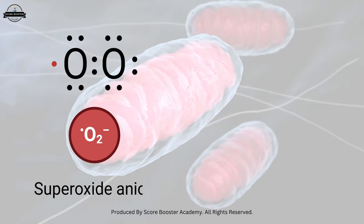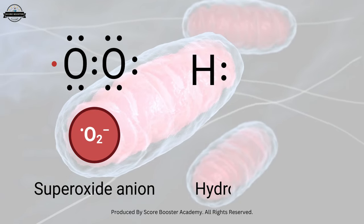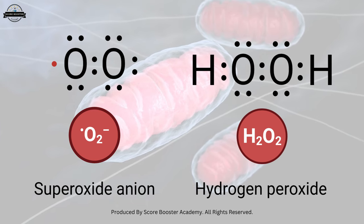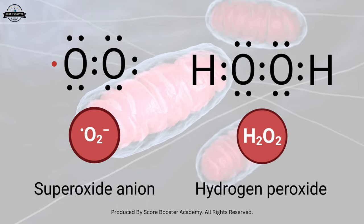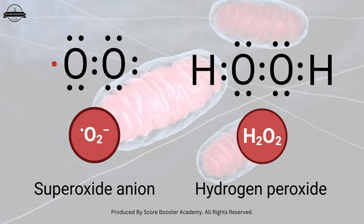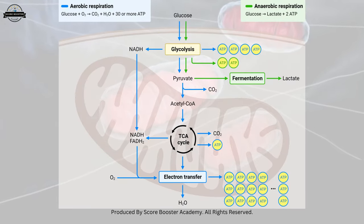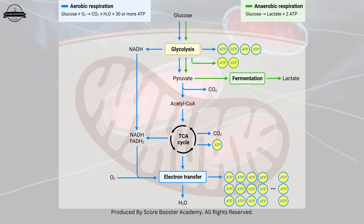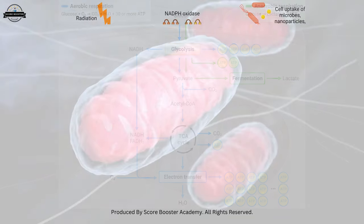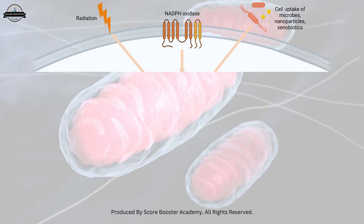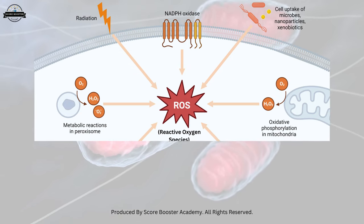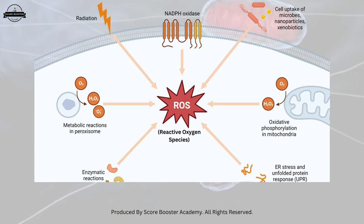Mitochondria are also involved in maintaining the balance of reactive oxygen species, such as superoxide and hydrogen peroxide. While reactive oxygen species are natural byproducts of cellular respiration, excessive amounts can be harmful. Mitochondria help neutralize and detoxify reactive oxygen species, protecting the cell from oxidative damage.